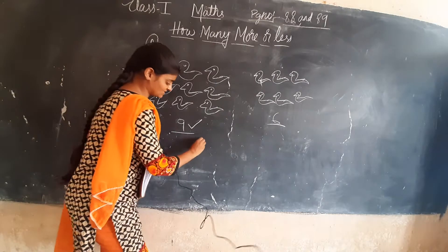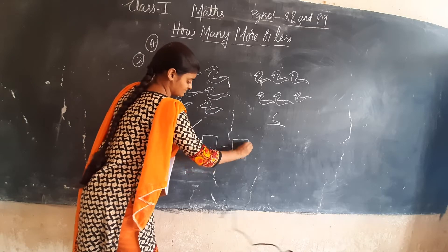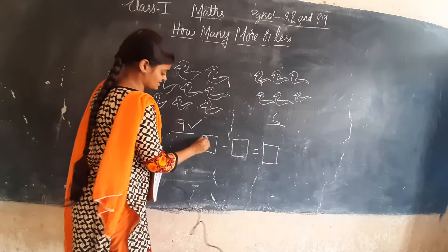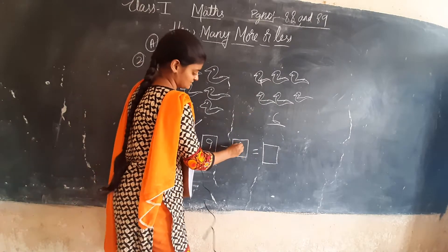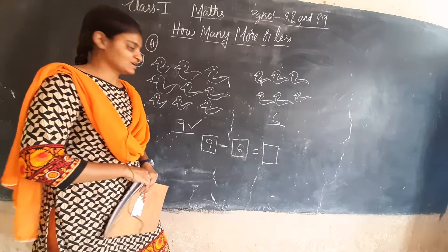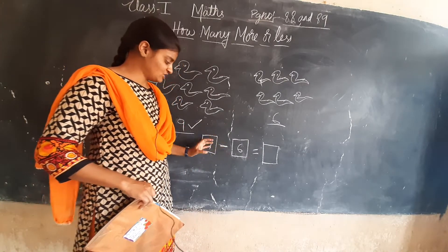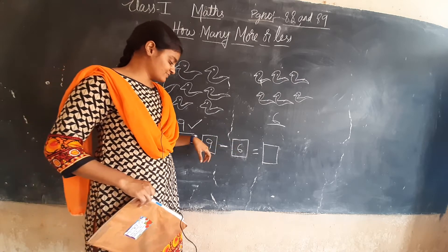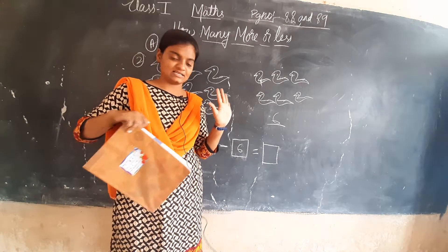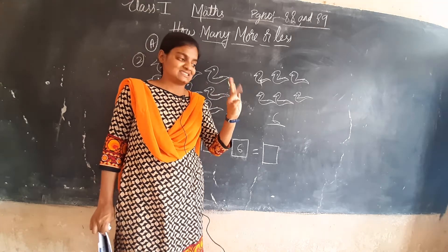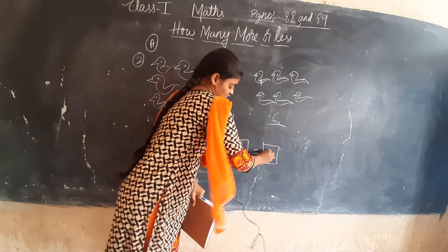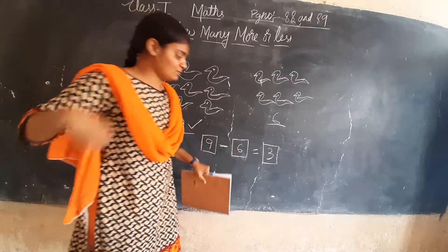How many more birds are there? We need to do the sum. In the first column 9 birds, in the second column 6 birds. Keep the minus symbol — for subtraction, the symbol is minus. So we need to do 9 minus 6. Keep 9 in the mind, take 6 on the fingers: before 9 — 8, 7, 6. So 3 is the answer — 3 birds are more.